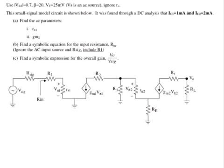This circuit is a small signal model of a BJT. The DC values for IC1 is given as 1 milliamp and IC2 is given as 2 milliamps.